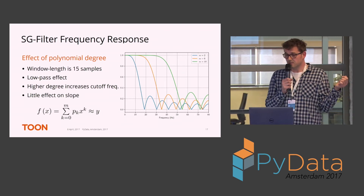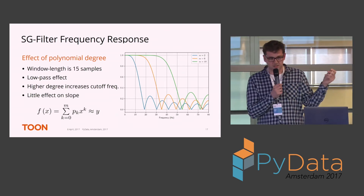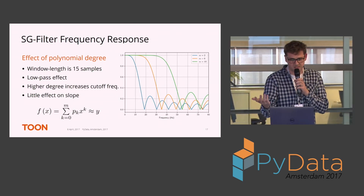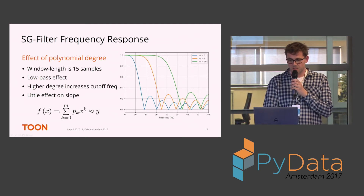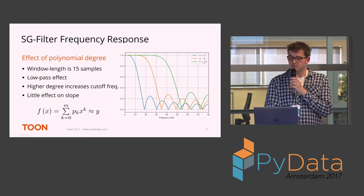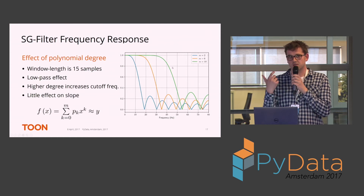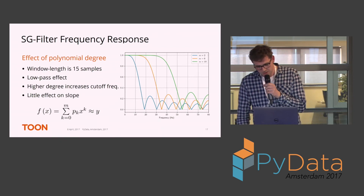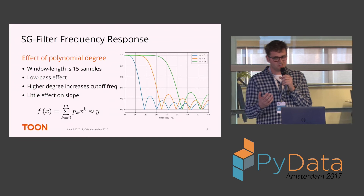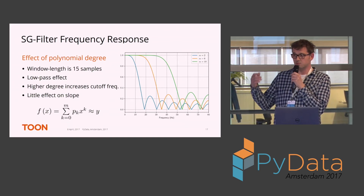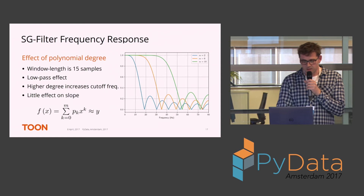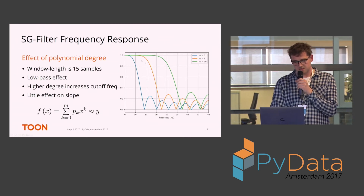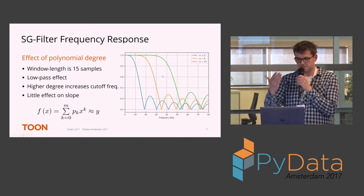Apparently polynomial smoothing is a low-pass filter, so what happens if we start tweaking the polynomial degree? With the window length fixed but the polynomial degree changed, you can see that increasing the polynomial degree actually increases the cut-off frequency of your low-pass filter. So if the filter distorts your low-frequency signal too much, you could increase the polynomial degree; if you want more high frequencies to be attenuated, decrease the degree. Also worth noting: the slope of the filters remains pretty much similar regardless of the degree.